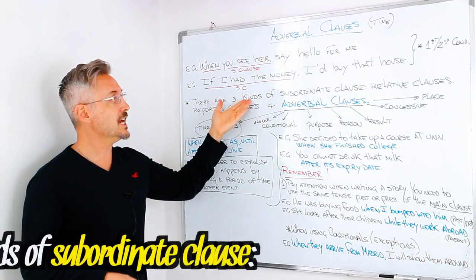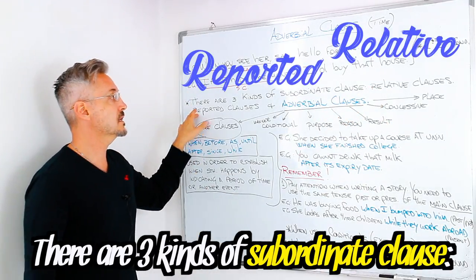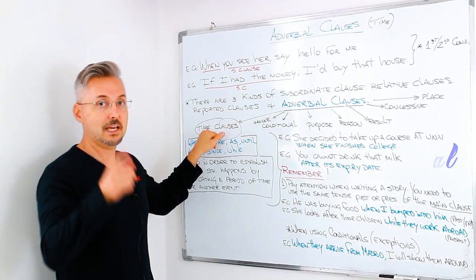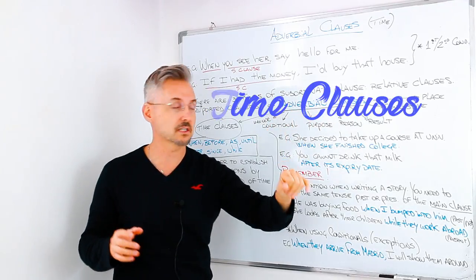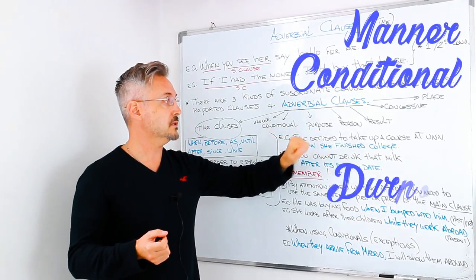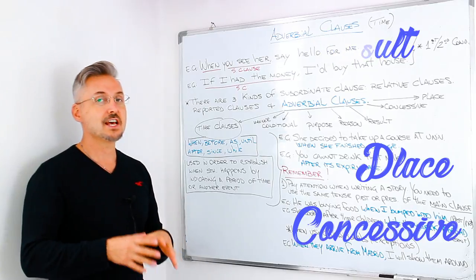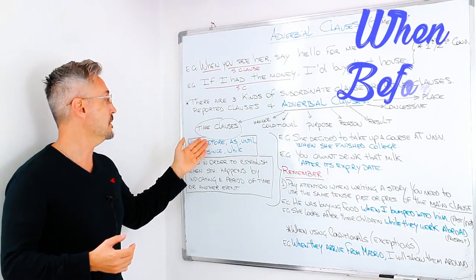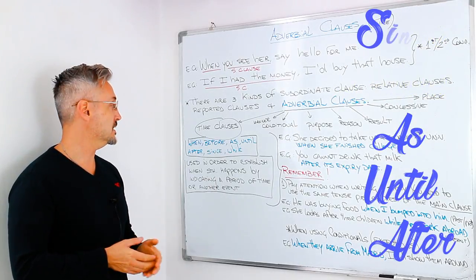There are three kinds of subordinate clause: relative clauses, reported clauses, and adverbial clauses. In this lesson, I'm going to talk about adverbial clauses — in this case, time clauses — because there are eight types of adverbial clauses: manner, time, conditional, purpose, reason, result, concessive, and place. The time clause conjunctions we're going to cover are: when, before, as, until, after, since, and while.